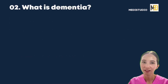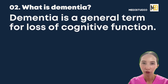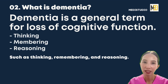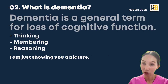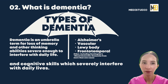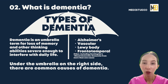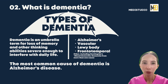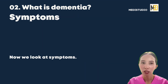What is dementia? Dementia is a general term for loss of cognitive function, such as thinking, remembering, and reasoning. As you can see in the picture, dementia is a general term for loss of memory and cognitive skills, which severely interfere with daily lives. Under the umbrella on the right side, there are common causes of dementia — there is Alzheimer's disease and vascular dementia, for example. The most common cause of dementia is Alzheimer's disease. Now we look at symptoms.